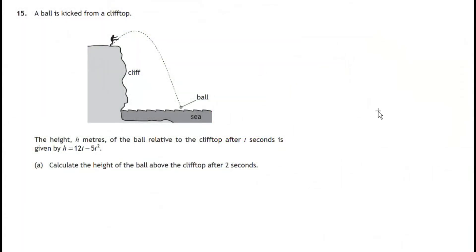In this question we've got somebody kicking a ball off the top of a cliff. We're told that the height is given by this formula: 12t minus 5t squared, where t measures the number of seconds after the ball is kicked.